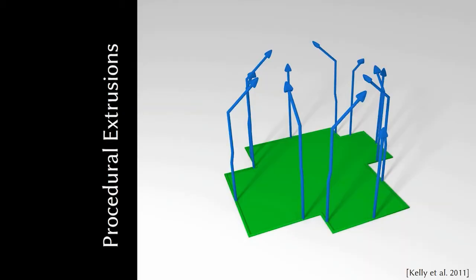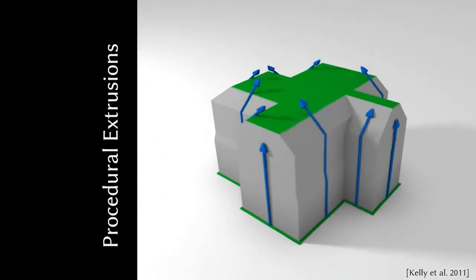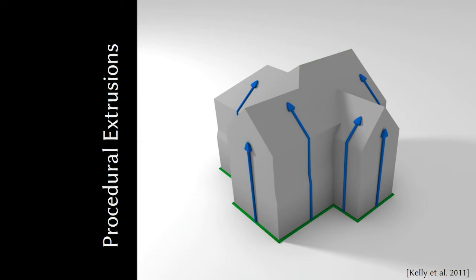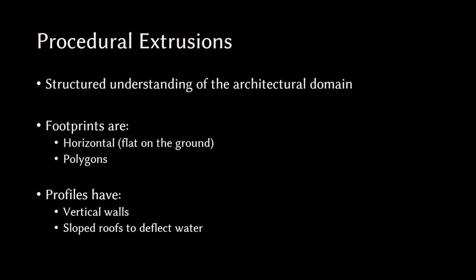Here we see our footprint in green and our profiles in blue. We're going to use slices of our roof-modeled straight skeletons to get our footprint to follow our profiles. This is presented in our previous work on procedural extrusions. This gives us a structural understanding of the architectural domain. This decomposition into both a 2D footprint and a set of profiles gives us a representation that architects and city planners understand, and has proven very flexible.